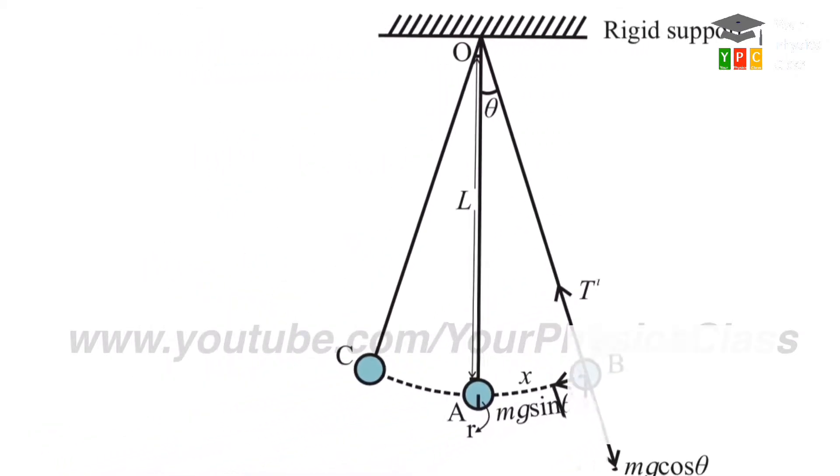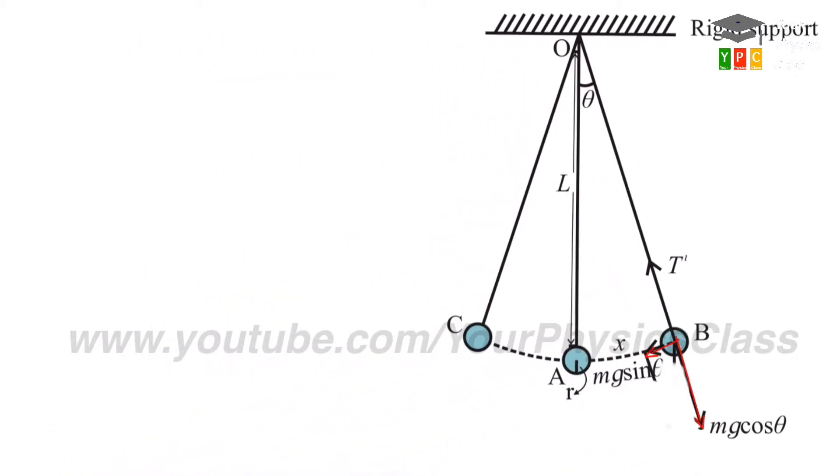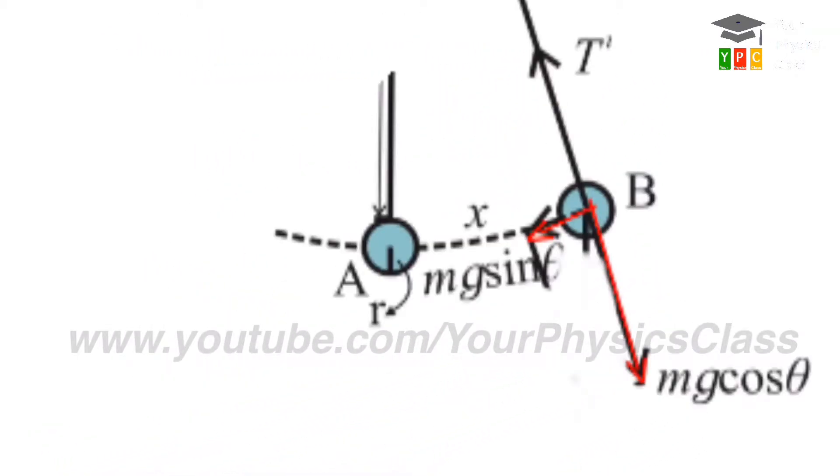Now, instead of weight, we have taken their components. Therefore, I remove the weight from here. Now the picture is very clear. So tension is balanced by mg cos theta. Hence, it is not responsible to start or stop the motion. Thus, tension plays no role in this motion.